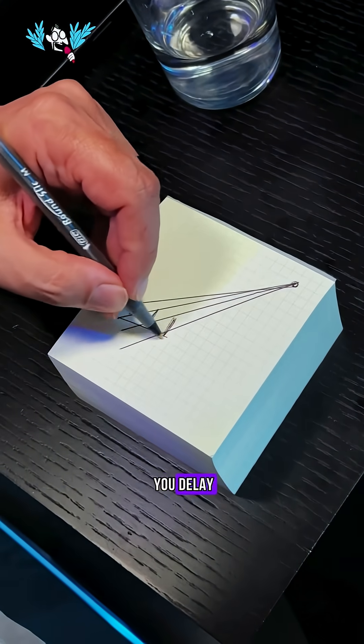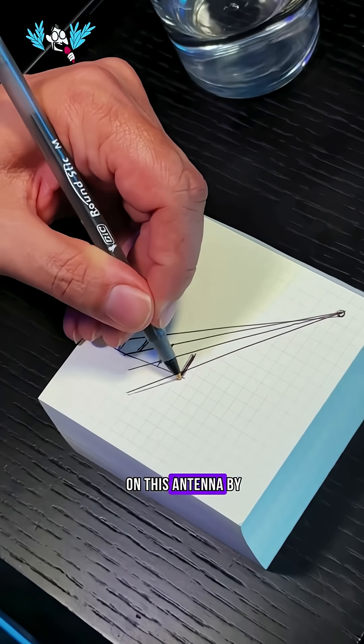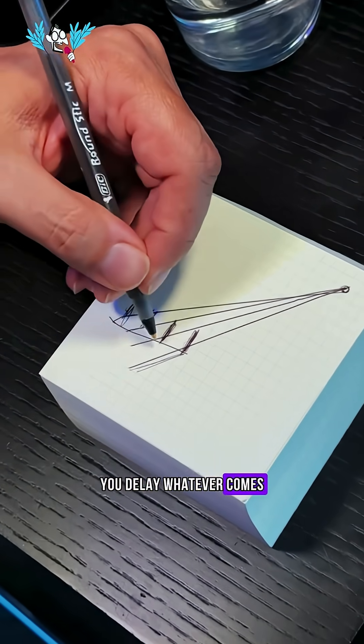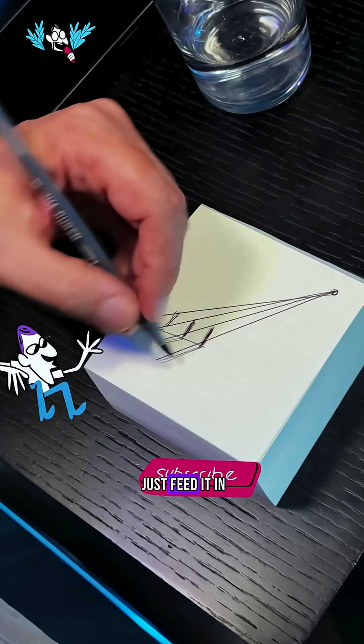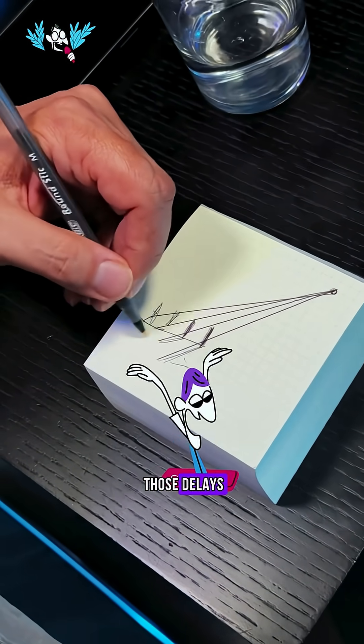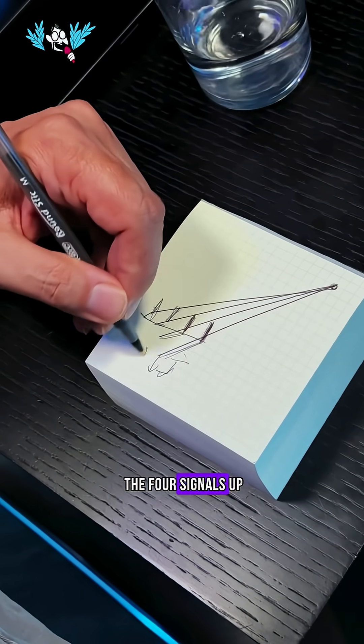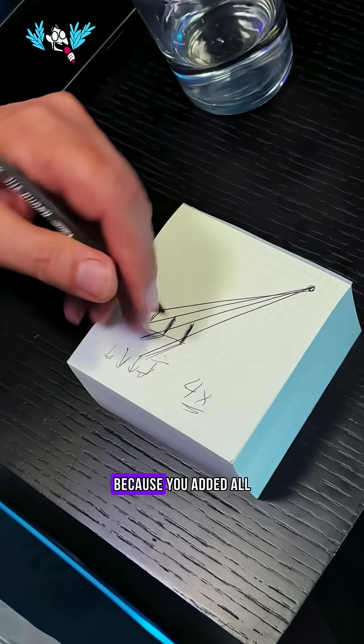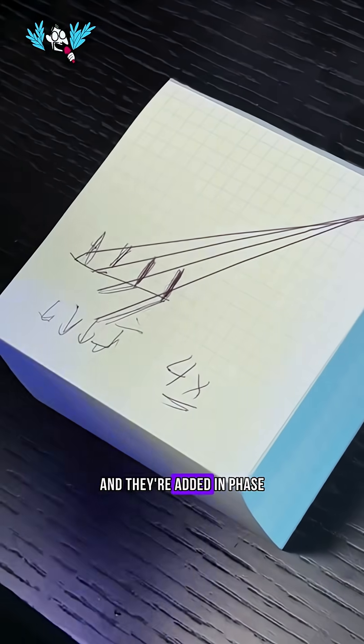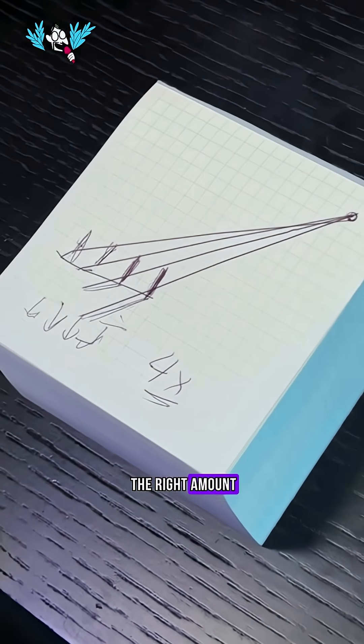So the big trick is you delay whatever signal gets in on this antenna by this much. You delay whatever comes on this antenna by this much, on this antenna by this little bit, and this antenna you just feed it in. And once you do those delays, you can just add the four signals up, and you end out getting a signal that's four times as strong because you added all four up, and they're added in phase because you delayed them the right amount.